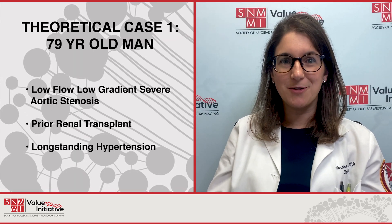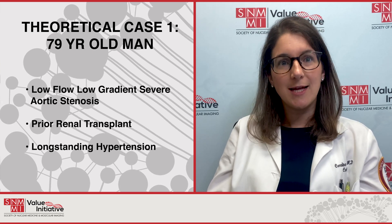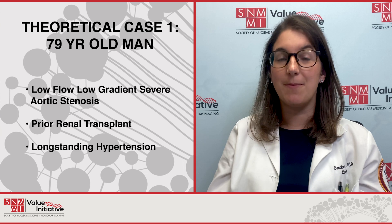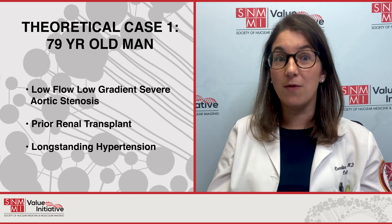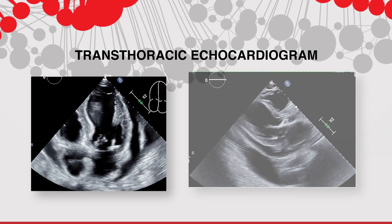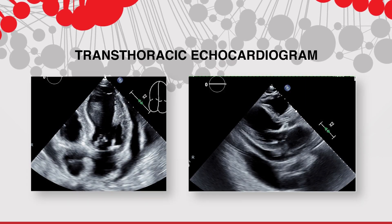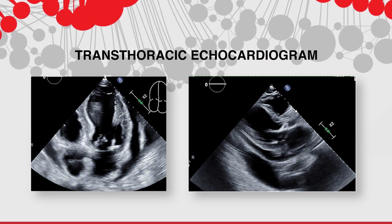Our first patient is a 79-year-old gentleman with a complicated past medical history. He has long-standing hypertension and end-stage renal disease complicated by two renal transplants. He was transferred to our center for evaluation of severe low-flow low-gradient aortic stenosis. Our first step was to obtain a transthoracic echocardiogram, which confirmed low-flow low-gradient aortic stenosis and also showed severe concentric left ventricular hypertrophy with grade 3 diastolic dysfunction. We began a workup for cardiac amyloidosis based on these echo findings.